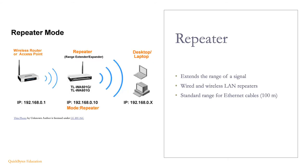Repeaters extend the range of existing signals and can be used to extend the range of wired and wireless networks. The range for standard ethernet cabling is 100 meters. Repeaters allow connecting devices that extend this length, and also extend or strengthen a wireless signal where it is too weak or non-existent.